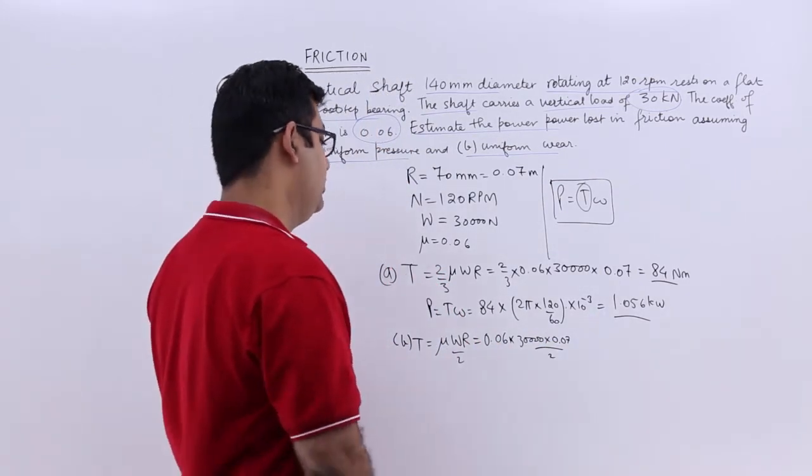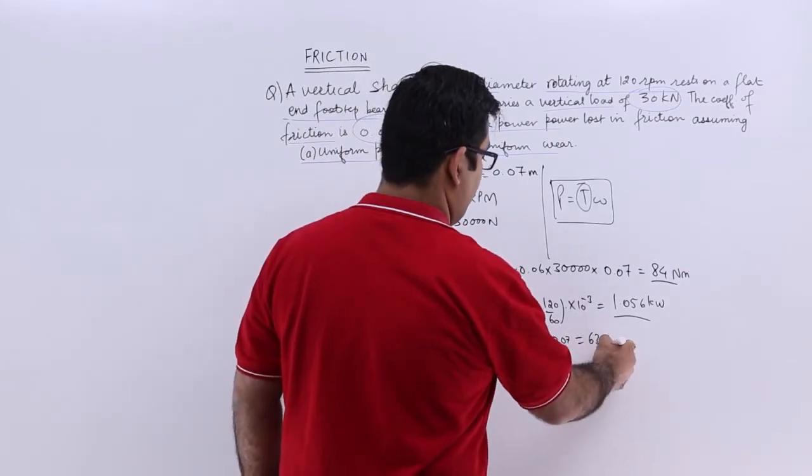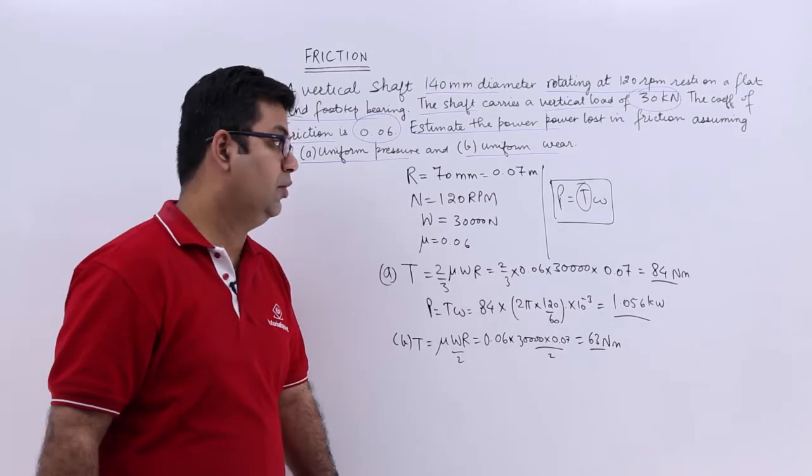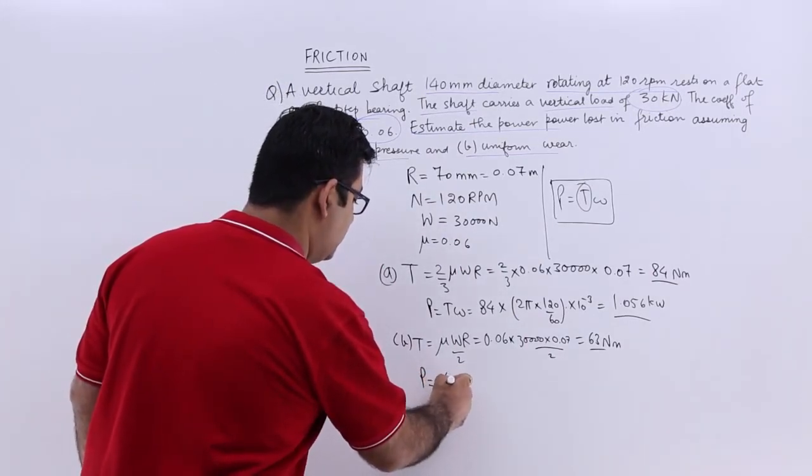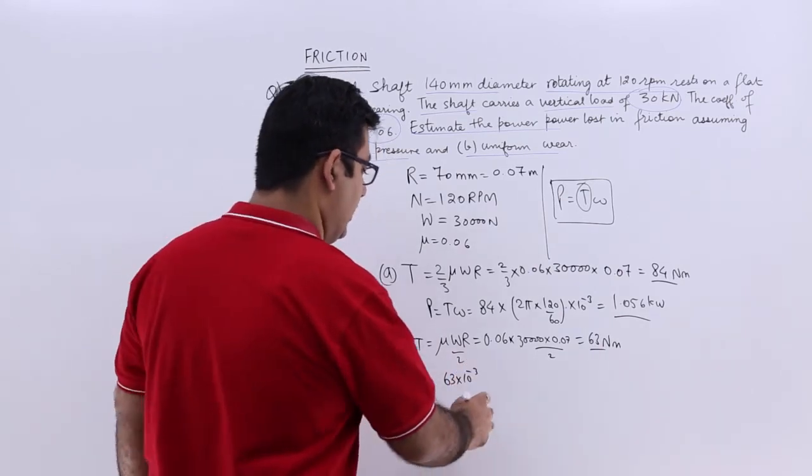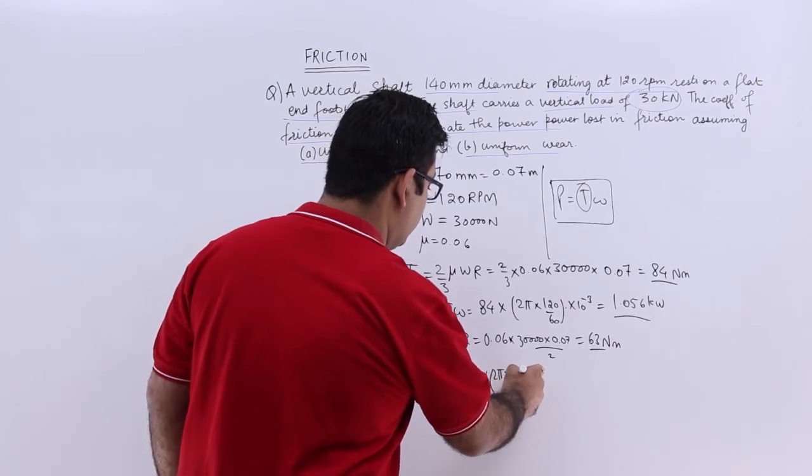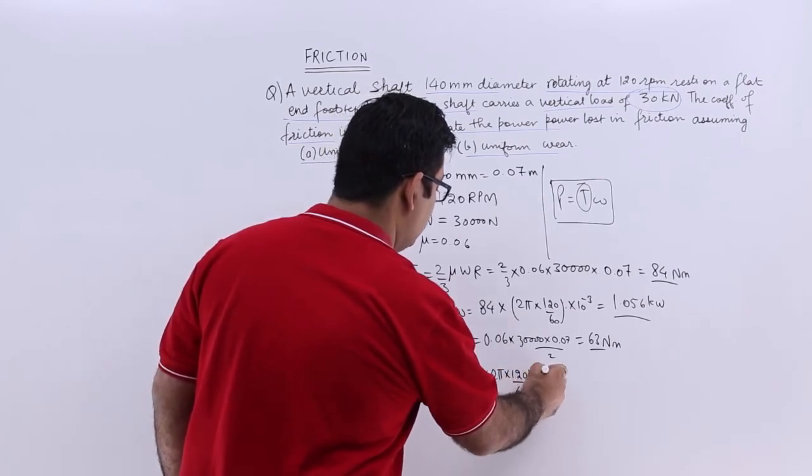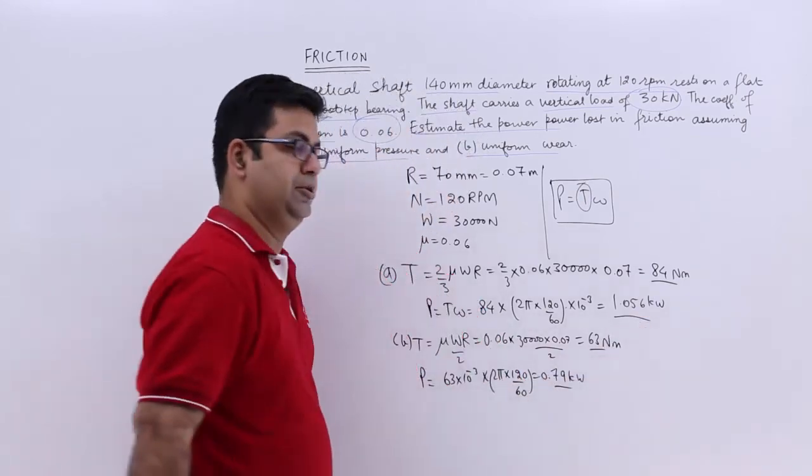So this would be equal to 63 newton meters. And power lost would be 63 into 10 to the power minus 3 into 2 pi into 120 by 60 gives you almost 0.8 kilowatts.